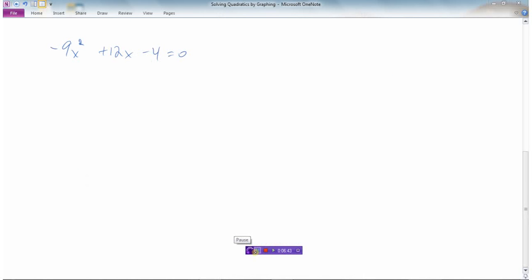For example, we have negative 9x squared plus 12x minus 4 equals 0. And so we're going to solve this using our graphing calculator.